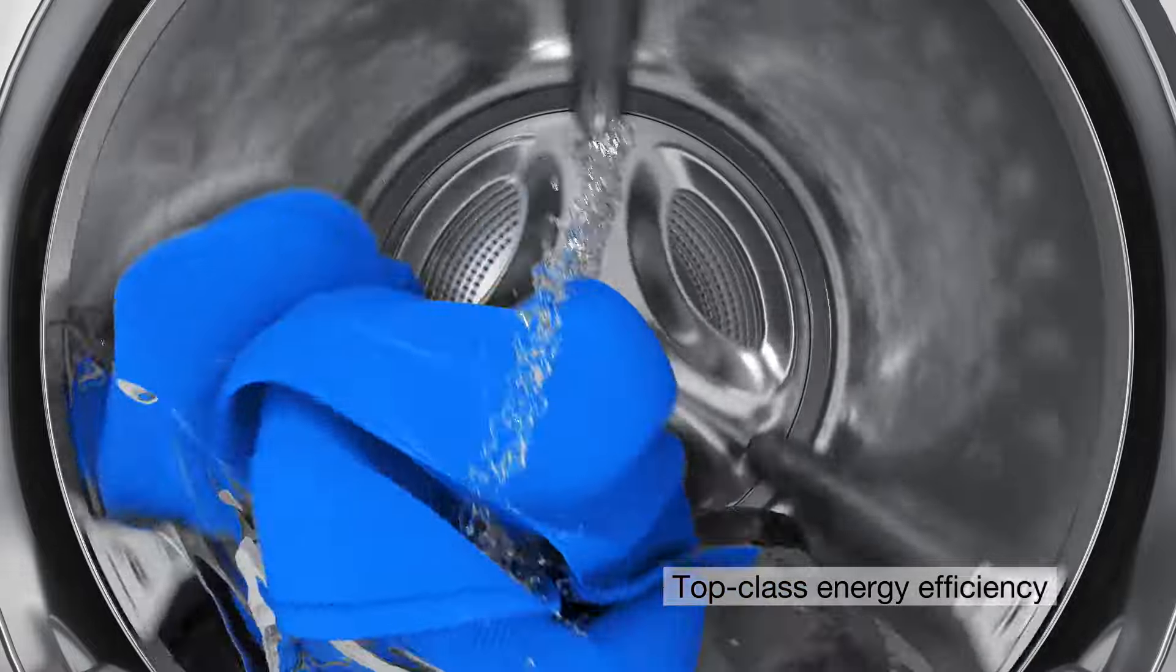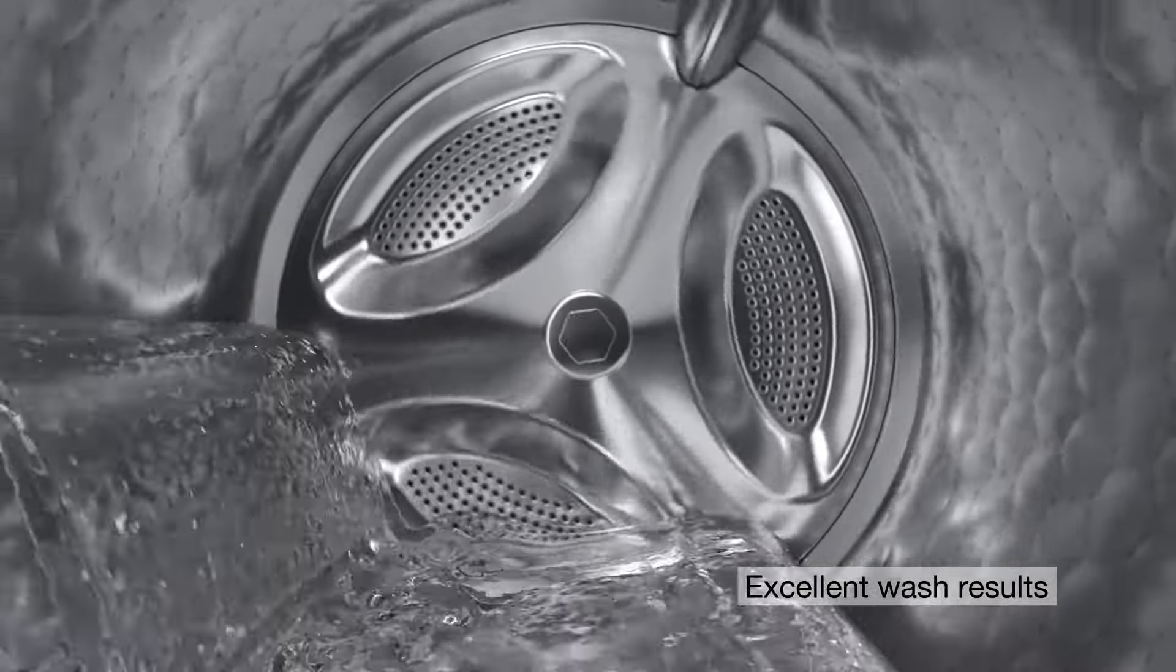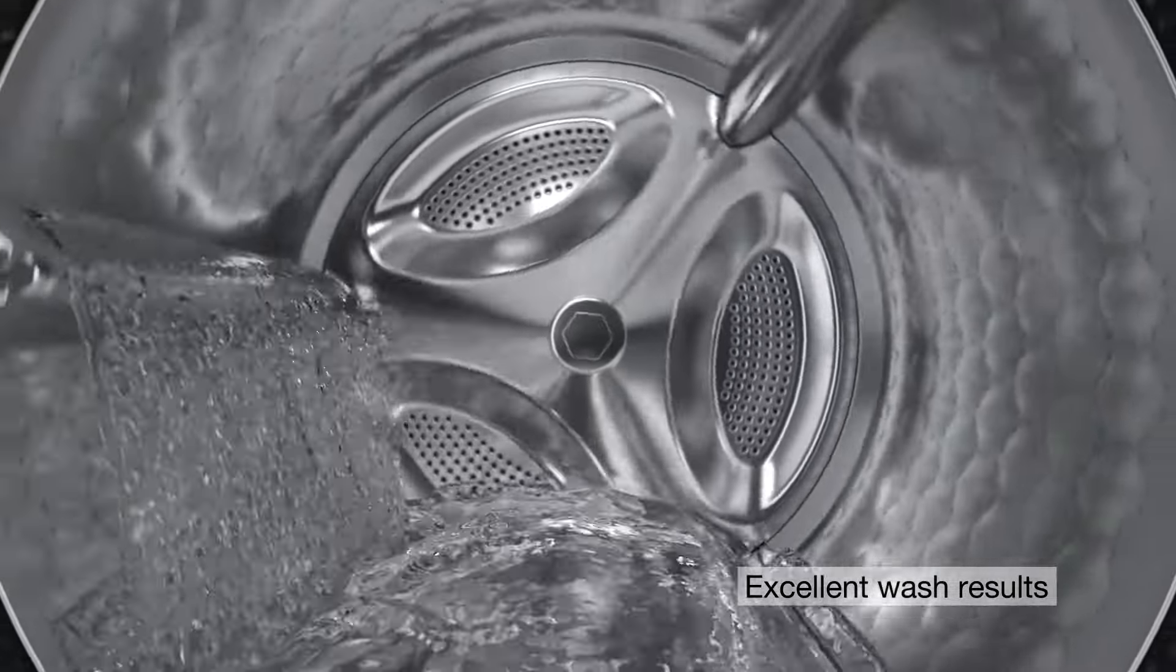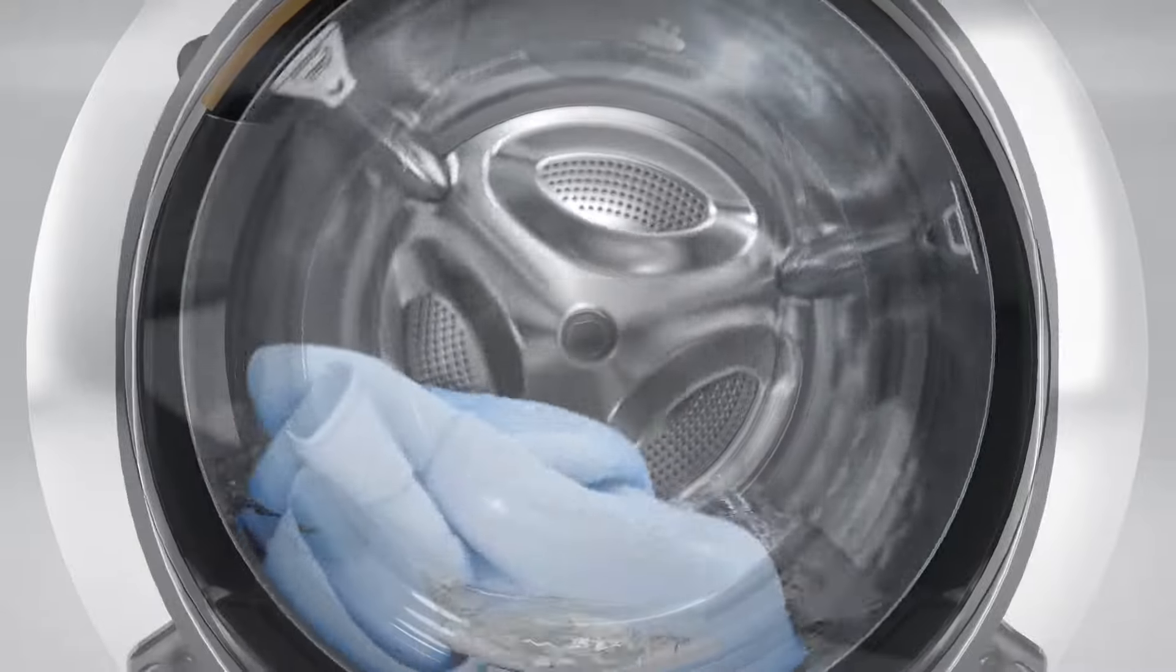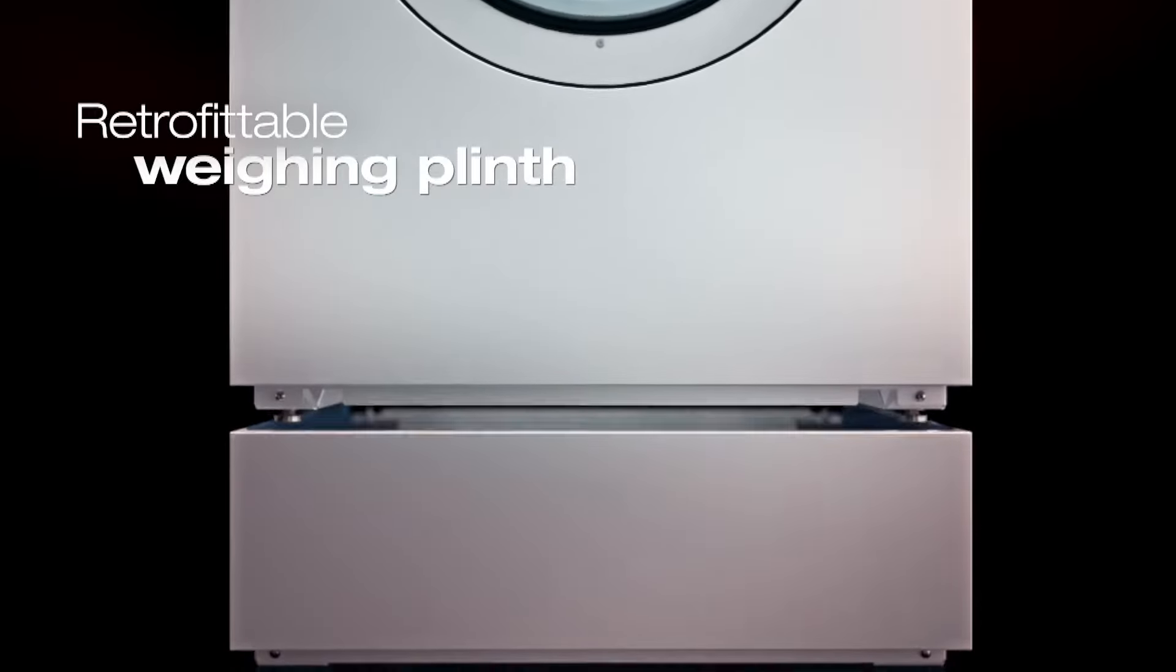Miele benchmark models feature energy and water savings of 20% and 30% respectively, with no compromise in wash performance. For partial loads, the optional weighing base automatically adjusts water and energy consumption, ensuring even more water and energy savings.